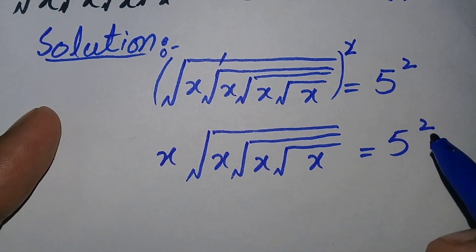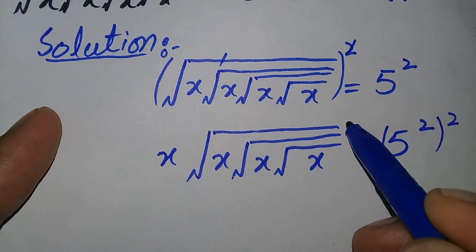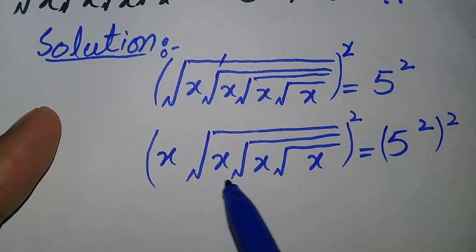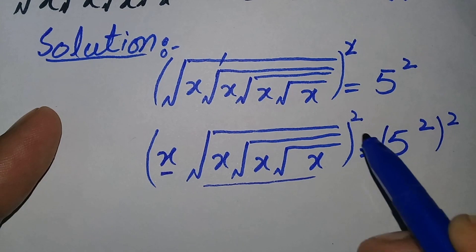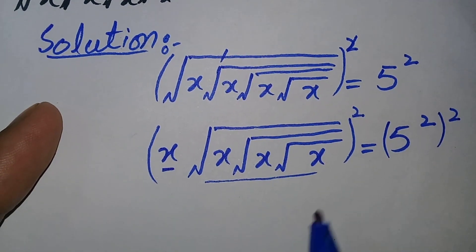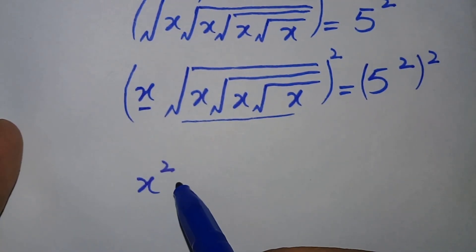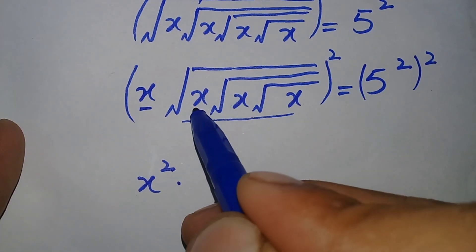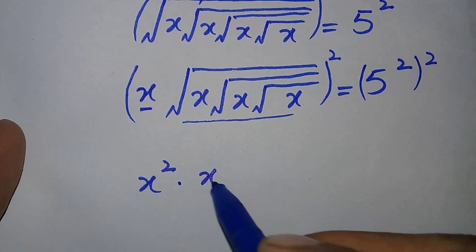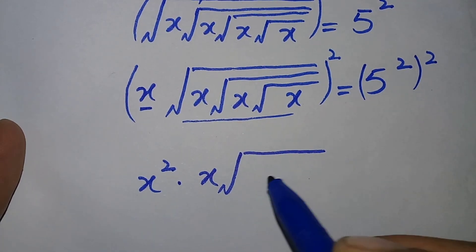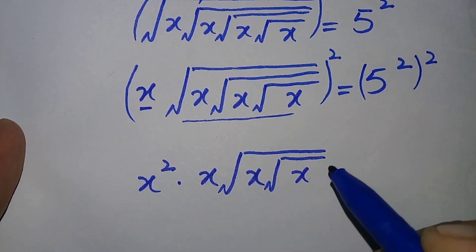In the next step we will again square both sides to eliminate this square root. Taking square on both sides: x whole squared. There are two terms inside the parenthesis — this x and this square root term. This square will be applied on both terms, so it will become x raised to power 2, and this square will also be applied on this term. This square and this square root will cancel each other, leaving only x times square root of x times square root of x on the left hand side.